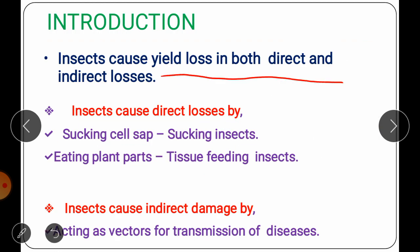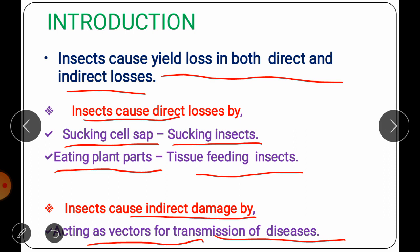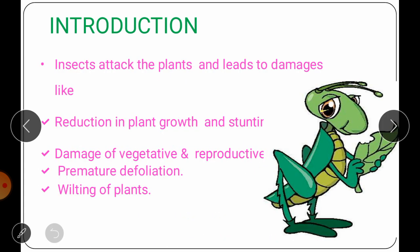Insects cause yield loss both directly and indirectly. Direct losses are caused by sucking insects, which form the sucking insect pest complex, and by tissue-feeding insects that eat plant parts such as leaves, fruits and flowers. Indirect damage is caused by insects acting as vectors for transmission of various diseases.